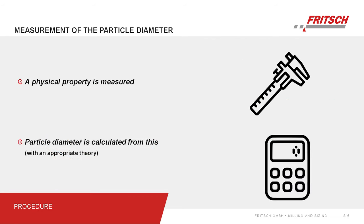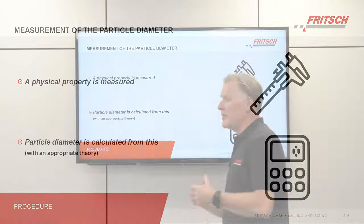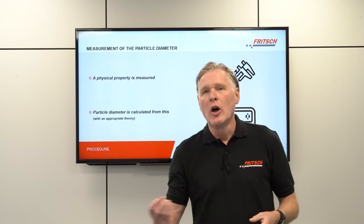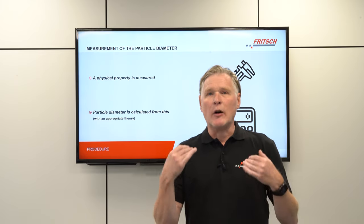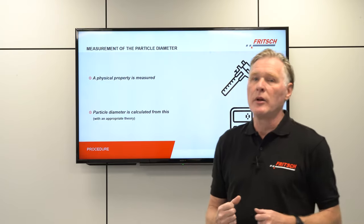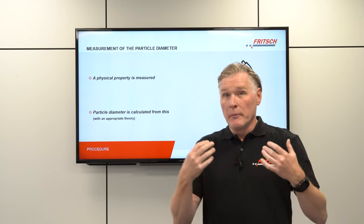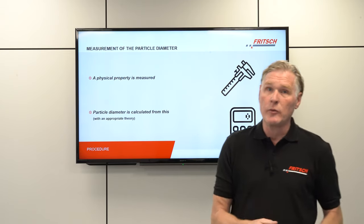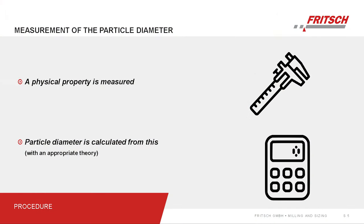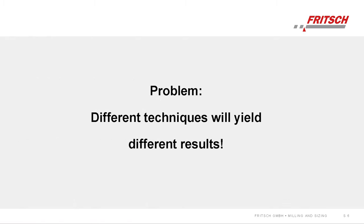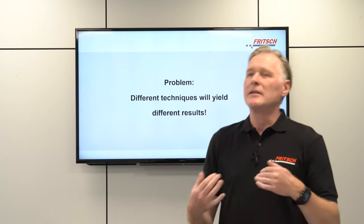Typically we measure some physical property — for example the sedimentation speed of particles in a liquid column, or the attenuation of a sound wave travelling across a sample. From this physical property we then calculate the particle diameter distribution using an appropriate theory. The general problem is that when you use different techniques, you will get different results.